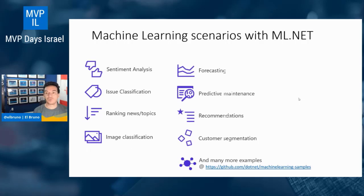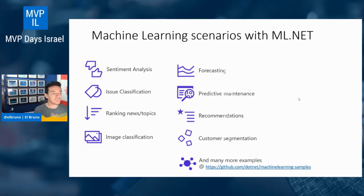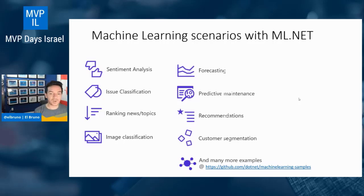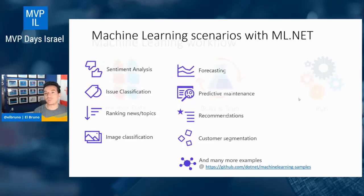There are two main repositories: one with the full source code of ML.NET and another with a lot of samples — 30-plus samples — where we can see how to use machine learning for sentiment analysis, recommendations, customer segmentation, and image classification like the one I just showed with the cats. It's a great place to start because, as a developer, we can check these repositories and play around to understand what we've got.